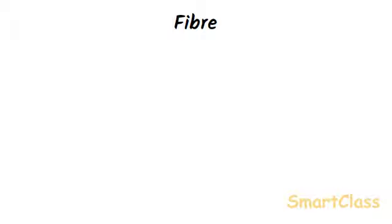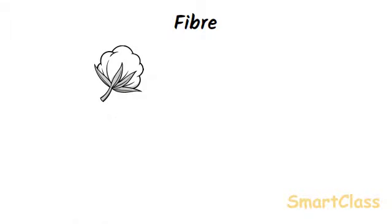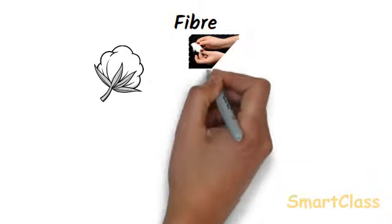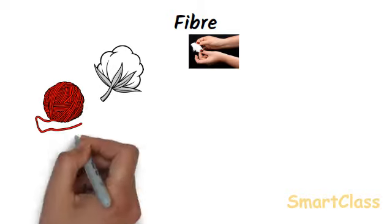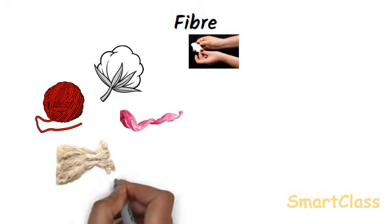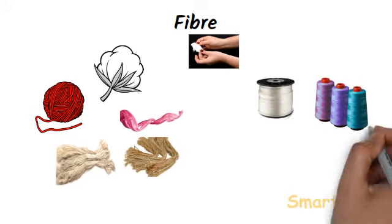We have all seen cotton. Cotton is a white, soft and fluffy material. If we hold a piece of cotton and pull it apart, we will see a large number of very thin and tiny thread-like strands in it. These small and thin strands are called cotton fibers. Some examples of fibers are cotton, wool, silk, flax, jute, nylon, polyester, and polyacrylic.